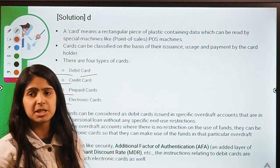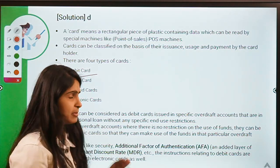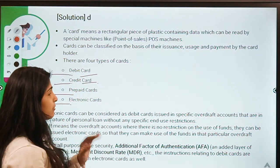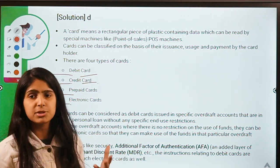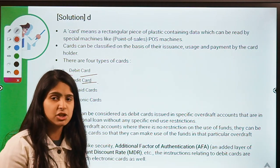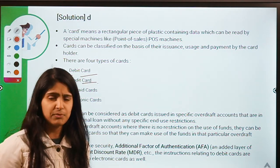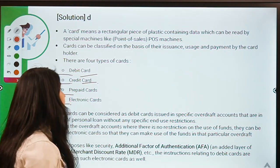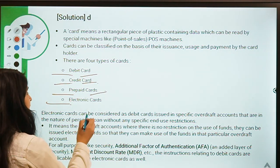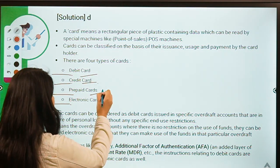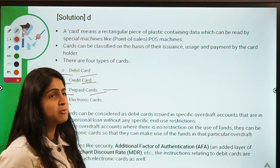A debit card allows you to use whatever money you have in your account to make payments at various places. A credit card, apart from using the money you have in your account, allows you to borrow some money from the financial institution that you can pay back later, obviously paying some interest on it.